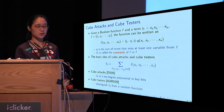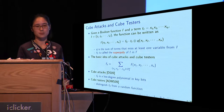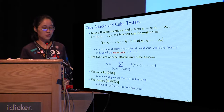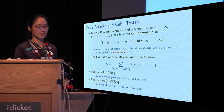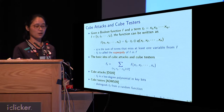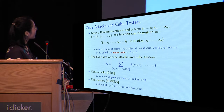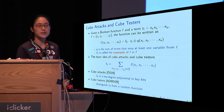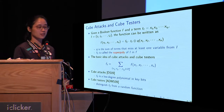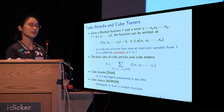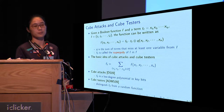A Boolean function can be written as the sum of terms which are supersets of Ti, and the terms which miss at least one variable from Ti. The basic idea of cube attacks and cube testers is that the symbolic sum of Boolean function f by assigning all possible values to Ti is exactly f_s. Cube attacks work by trying to find a low degree polynomial f_s in the secret variables, while cube testers work by trying to distinguish f_s from random functions.